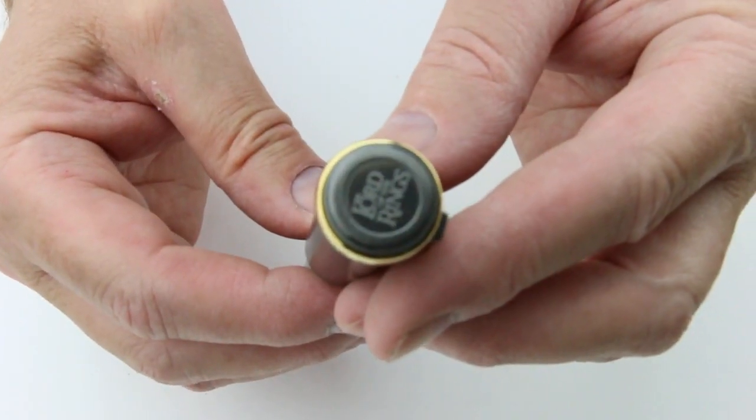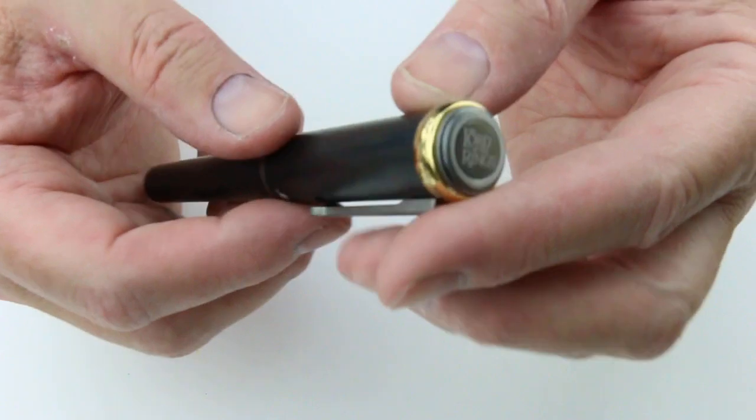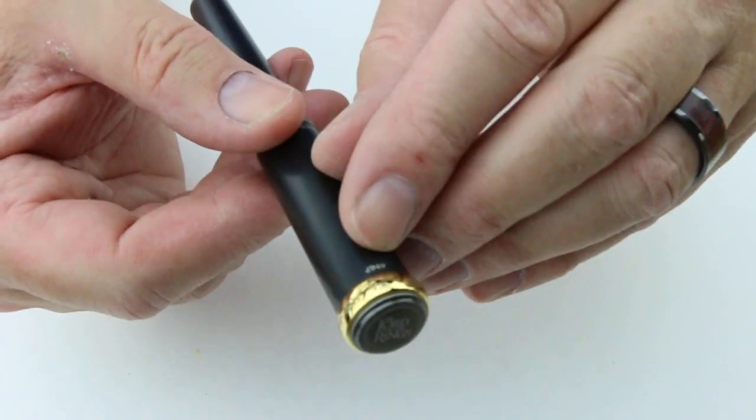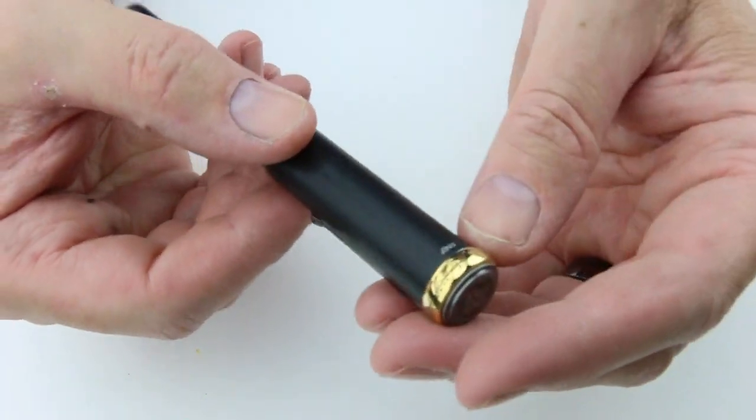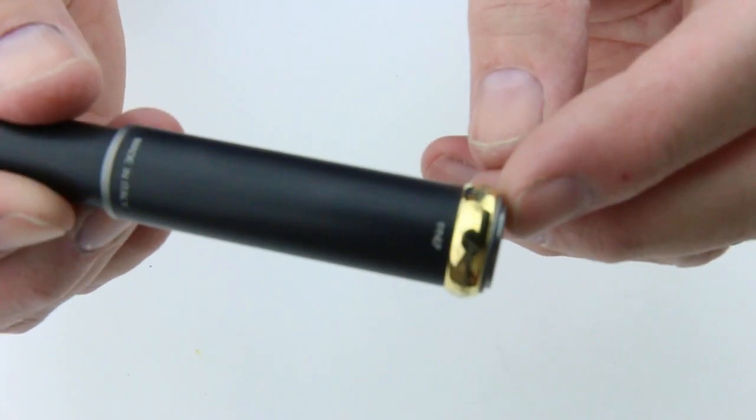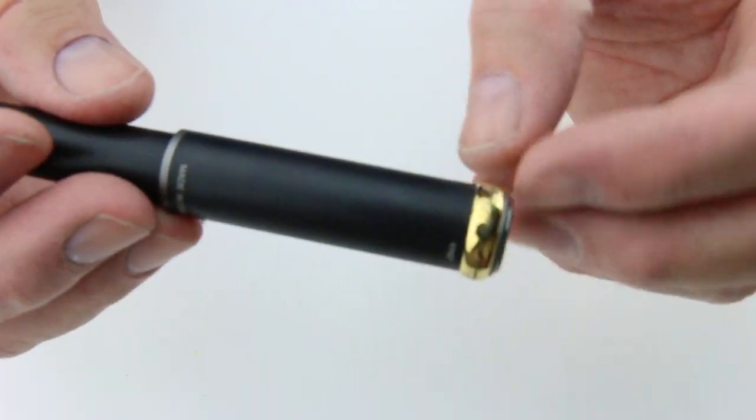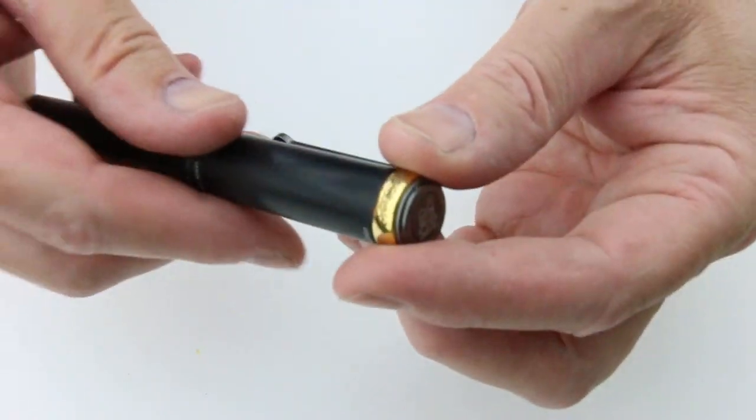On the top of the pen is the Lord of the Rings logo and there's a small engraving here at the top of the cap. You can see the one ring with the engraving on it. It's pretty neat.